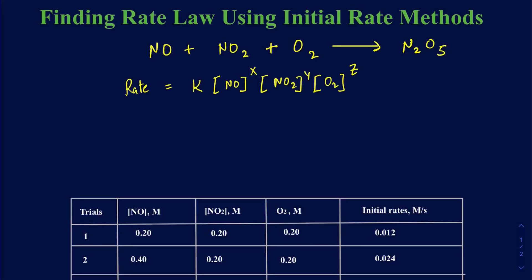Our job is to figure out what X, Y, and Z are going to be. Keep in mind, these values are not coming from the coefficients — they must be determined experimentally, because there will be times when the concentration of one reactant is not really a factor in controlling the rate. That's why you must use either initial rate methods or the reaction mechanism to find the order for each reactant and hence the overall order of the reaction.